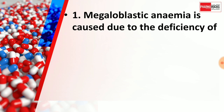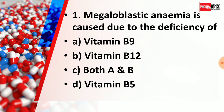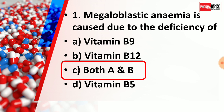Here is question number 1: Megaloblastic anemia is caused due to the deficiency of — Option A: Vitamin B9, Option B: Vitamin B12, Option C: Both A and B, Option D: Vitamin B5. You may pause the video to think about the correct answer, then resume for the answer. The correct answer is Option C, Both A and B.